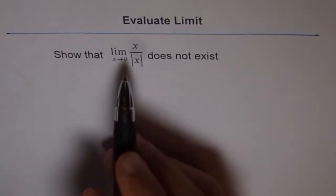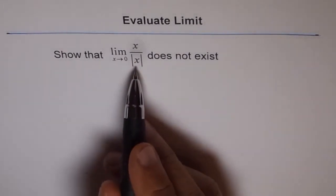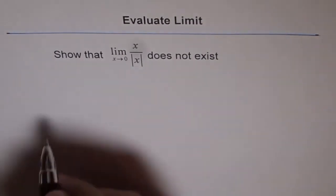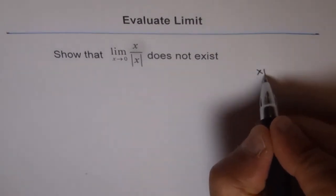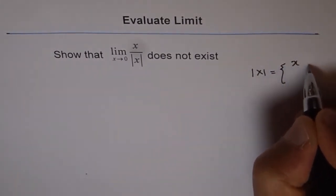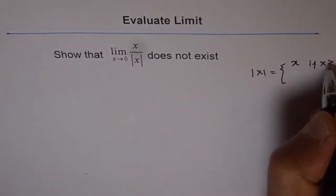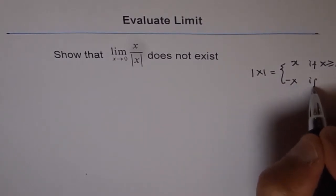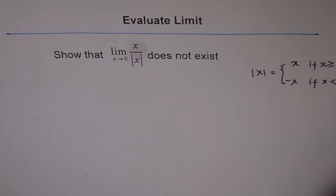Okay, let's first understand our function x over absolute x. Now, what is absolute x? Absolute x can be defined as equal to plus x if x is greater than or equal to 0, but it's negative x if x is less than 0. Correct?